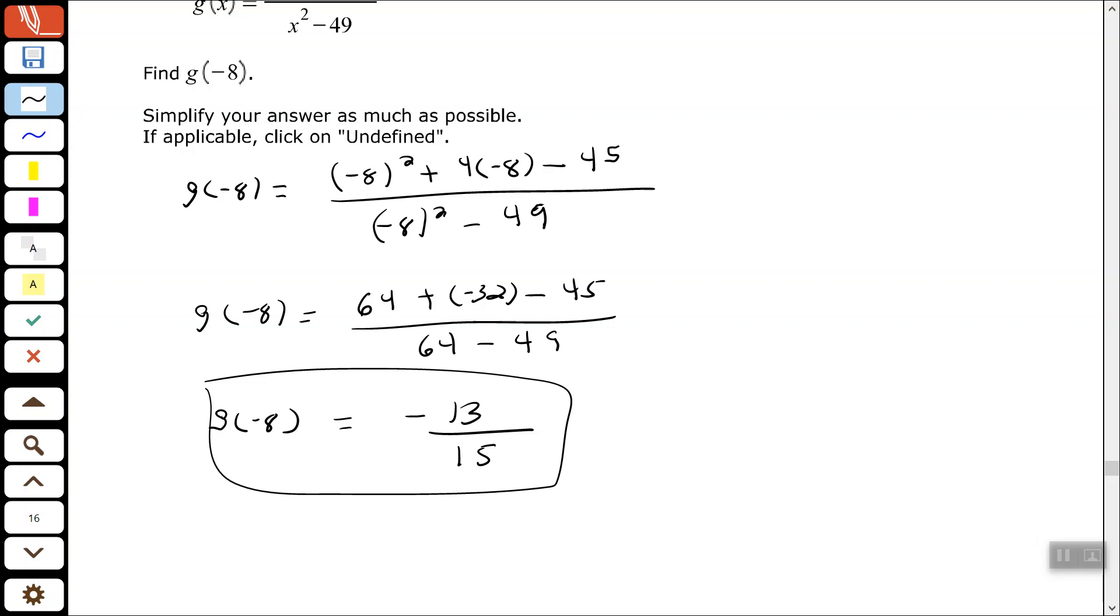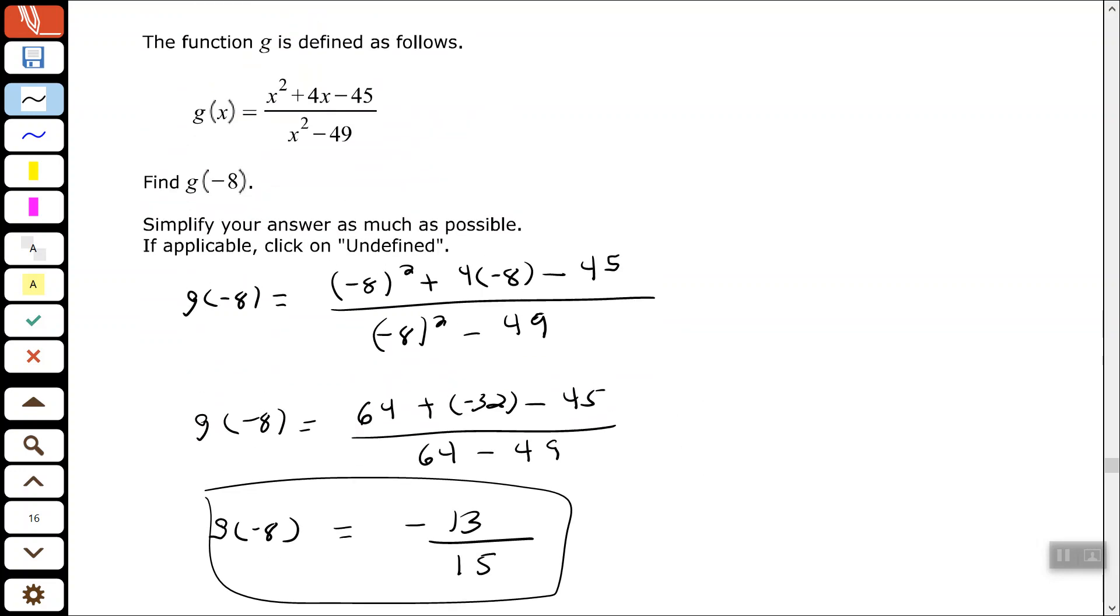Alright good people, that's it for that problem. Again, it's simply substituting everywhere or replacing x with -8 in this case. Everywhere you see an x, replace it with -8 and then use your order of operations to simplify.